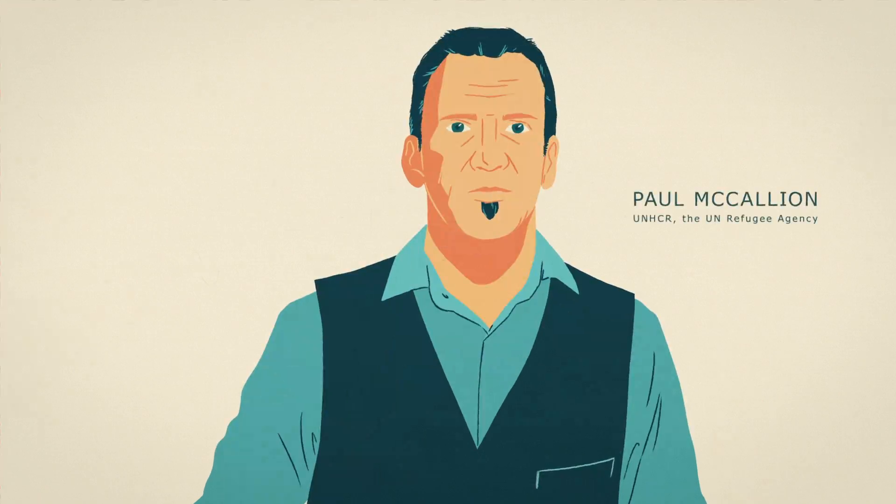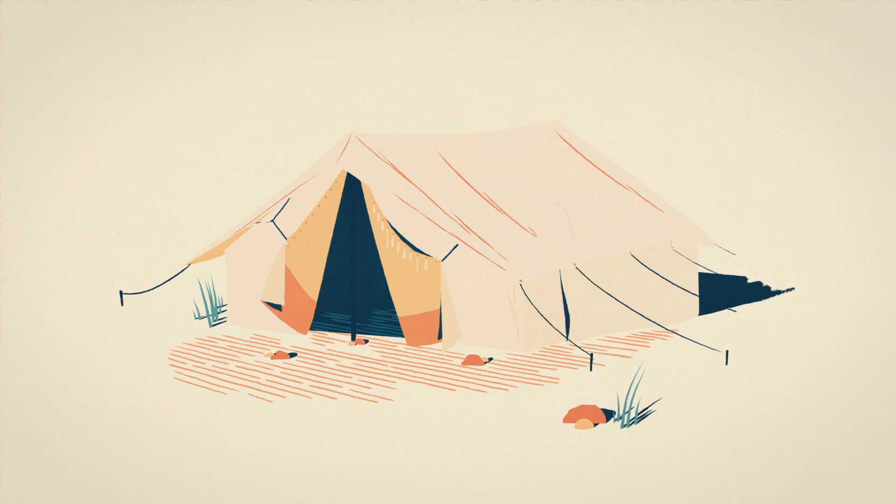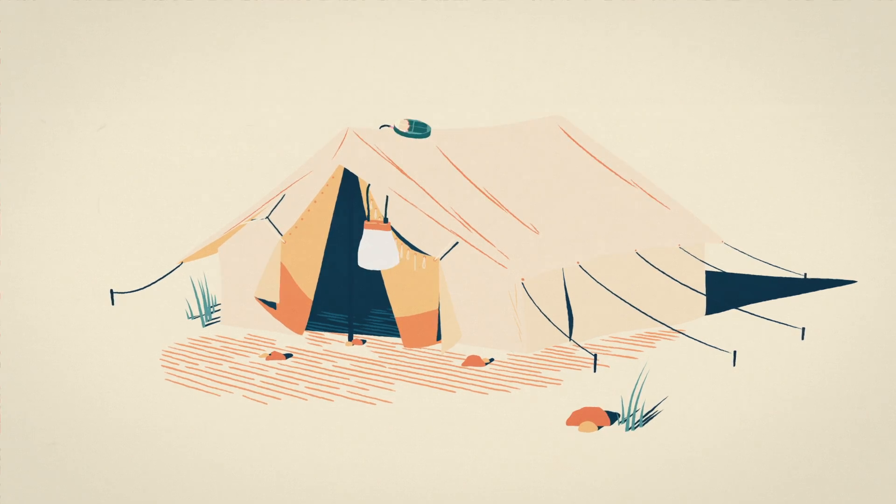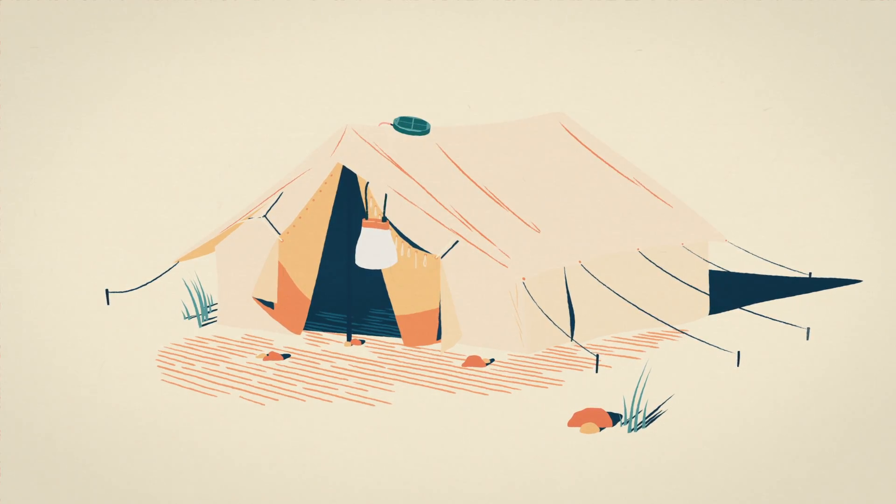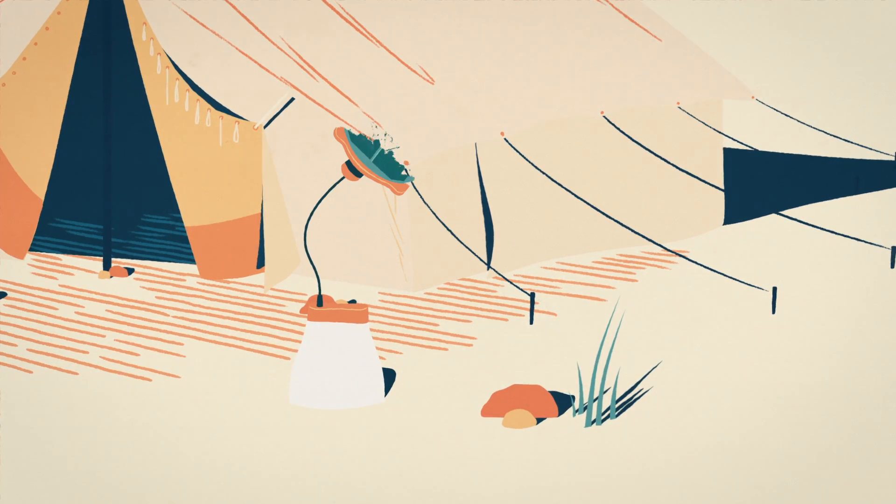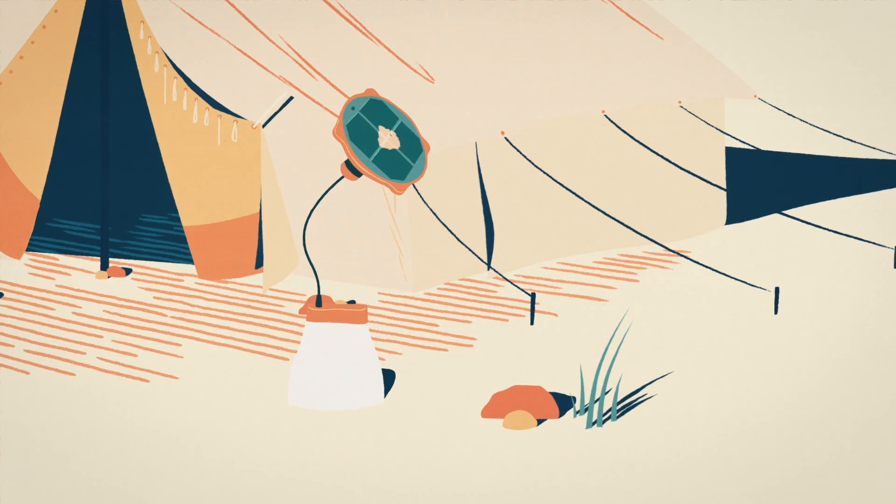There are three different types of lights that UNHCR use in a camp environment, but each light is broken down into different types. At the household level, refugees can have a panel on the roof which connects to a lantern inside their house, or refugees can simply have the panel and the lantern together and they put the lantern out to charge.